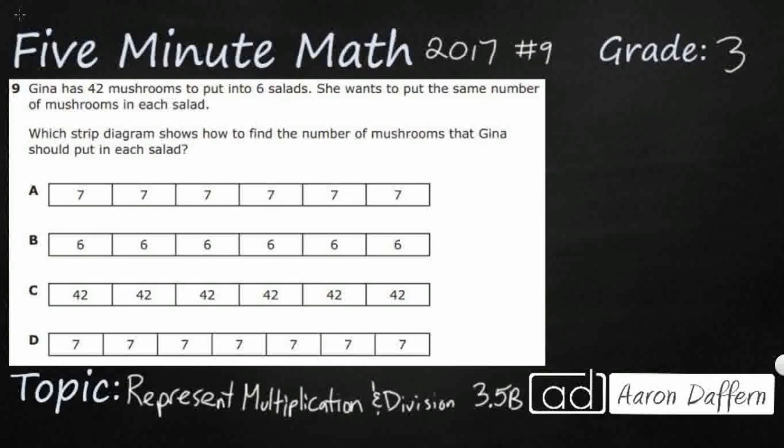So, we have a problem with Gina. She's got 42 mushrooms, and she wants to put them into 6 salads. She wants to put the same number of mushrooms in each salad. Which strip diagram shows how to find this?